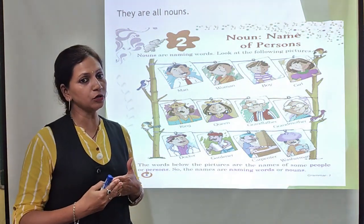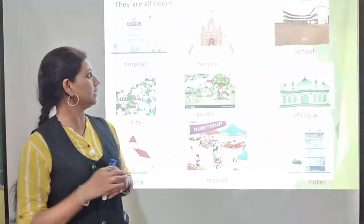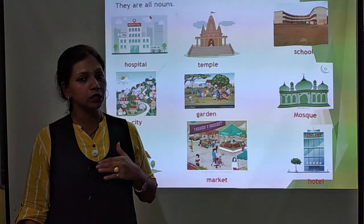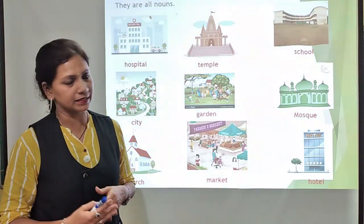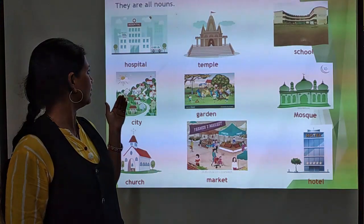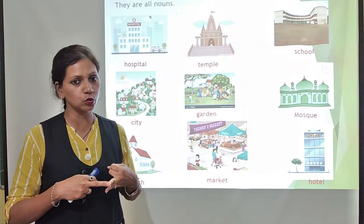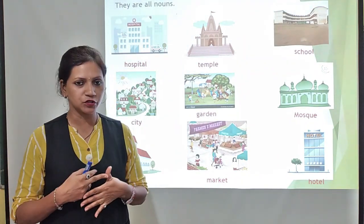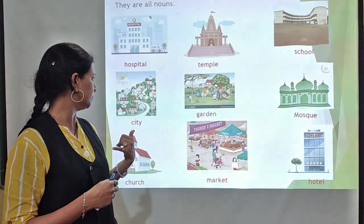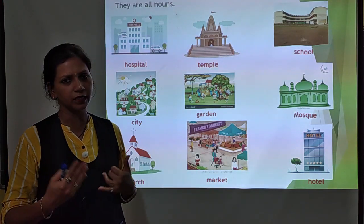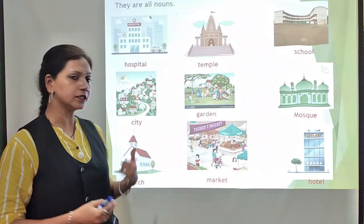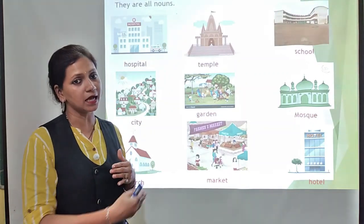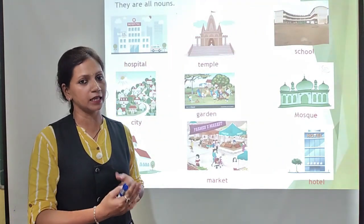Next, about places. Examples of places include: hospital, school, garden, temple, mosque, hotel, market, city, village, and church. These are different places and they are also called nouns.